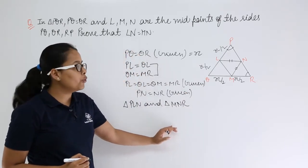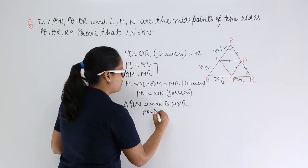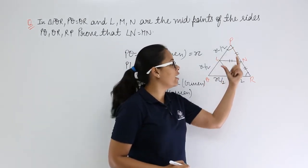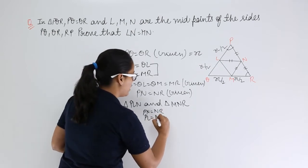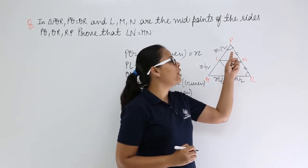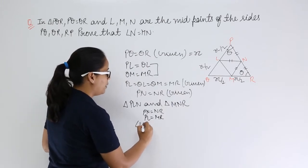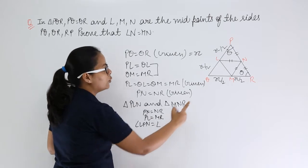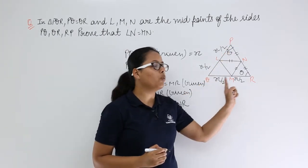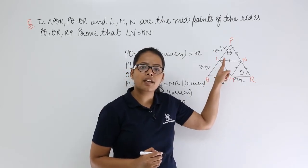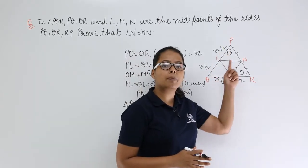In these two triangles, you know that PL is equal to MR — both are X/2. So write down PL equals MR. You also know that angle LPN equals angle MRN. Because PQ equals QR, this makes triangle PQR an isosceles triangle, and angles opposite to two equal sides are equal.